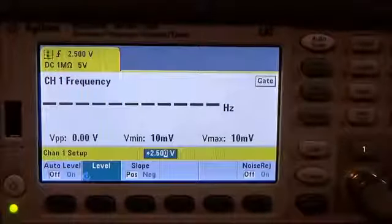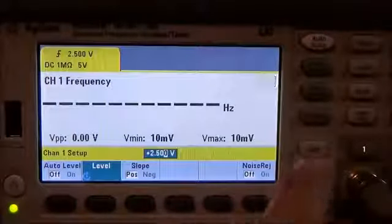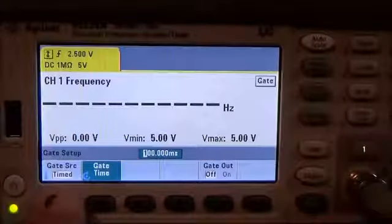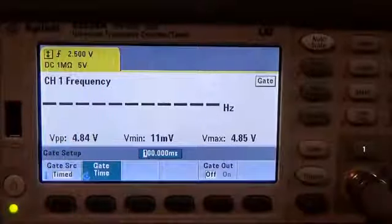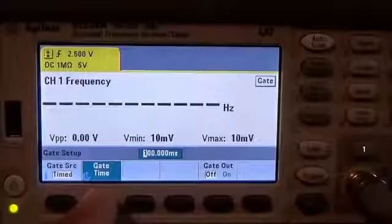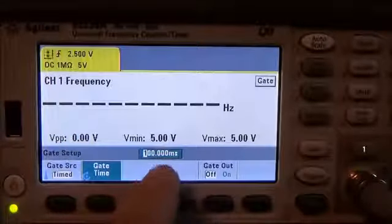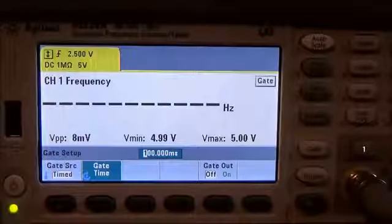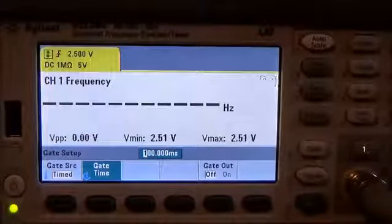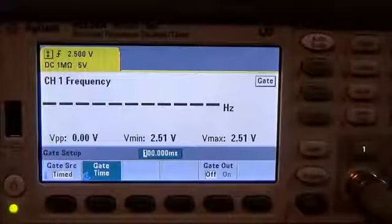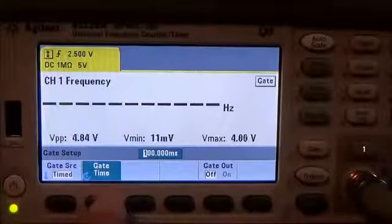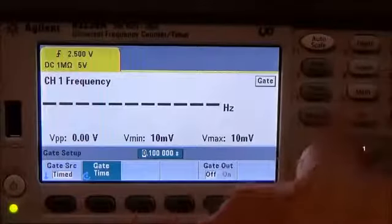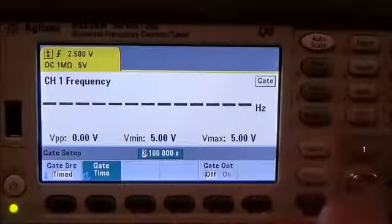The third hint I want to pass along is gate time. So let's press the gate button and then notice that the gate source is time. This is normal by default but if you notice the gate time is currently set to 100 milliseconds. Well if you think about this we've got a signal that is one cycle per second so we want to set the gate time a little longer. So we can do that by pressing the gate time soft key and then going ahead and increasing the number of seconds to maybe three.